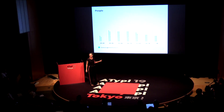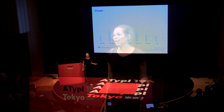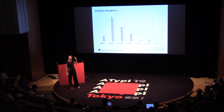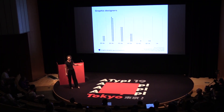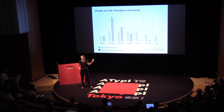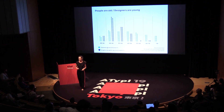This is the age distribution of the population of Australia. This is a distribution of graphic designers by age of Australia. As you can see, there's a great mismatch between the two.